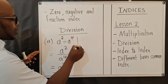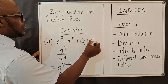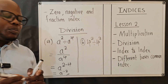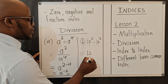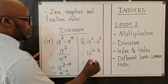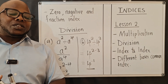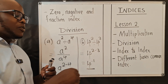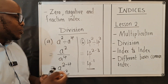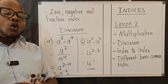Let's use numbers: 4 to the power 2 divided by 4 to the power 3. You write the base and subtract the powers, giving 4 to the power negative 1. Note: most people say 'powers,' but as covered in lesson one, these are more accurately called exponents or indices.